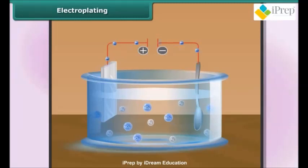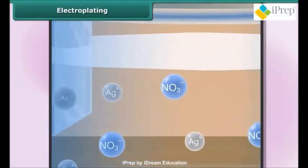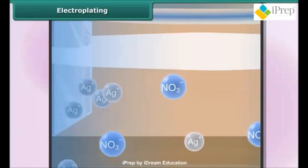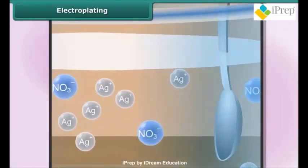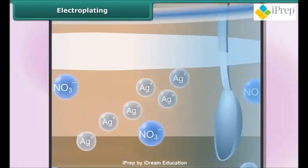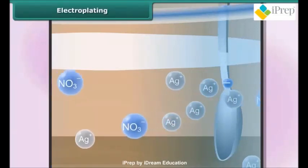As soon as electric current starts flowing through the solution, electrons begin to escape from the silver anode. This results in the formation of positively charged ions which separate from the anode and pass into the solution, where they migrate towards the cathode, attracted by its negative charge.